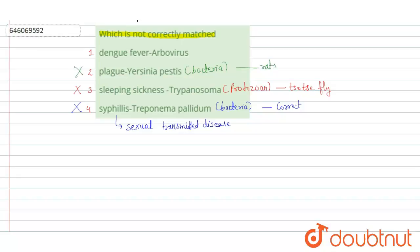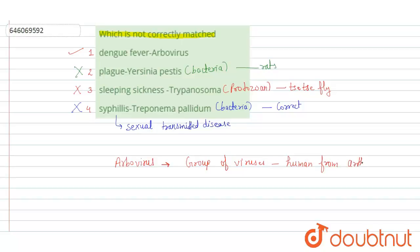So definitely dengue fever and arbovirus is the correct answer here. Arbovirus is not a single virus — it is actually a group of viruses, or group of viral infections, that are transmitted to humans from the group of insects known as arthropods.